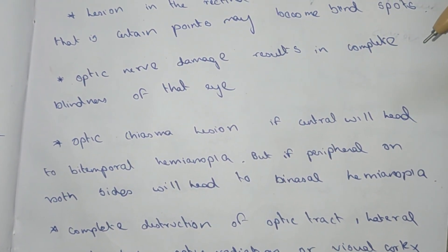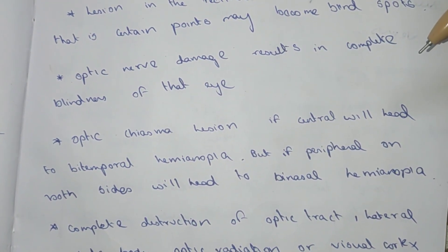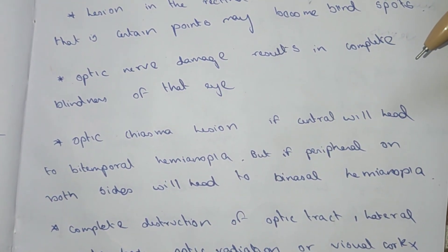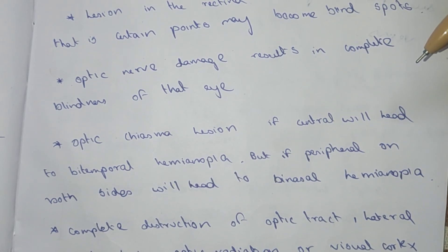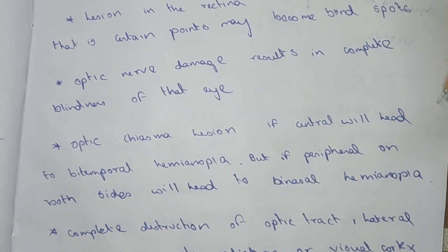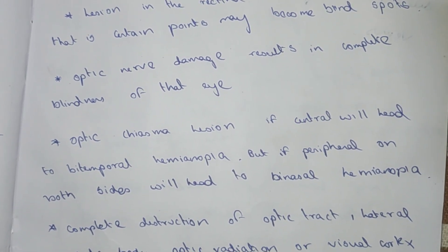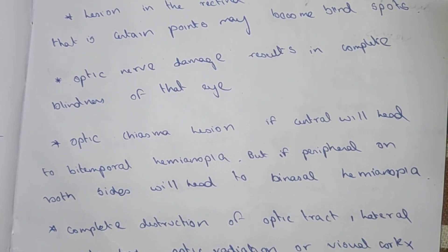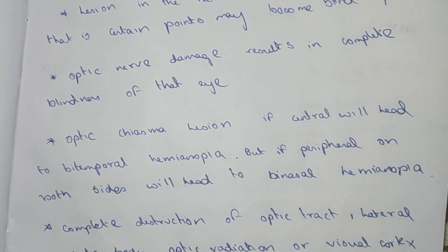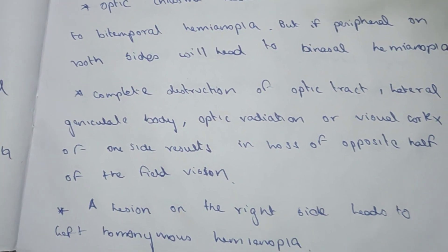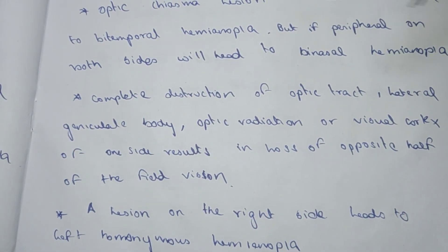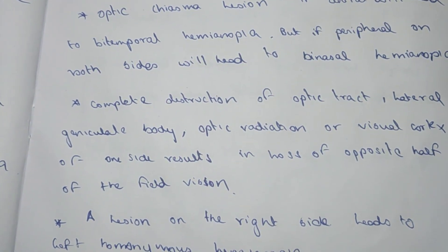To recap: a central lesion at the optic chiasma leads to bitemporal hemianopia, whereas a lesion on the peripheral side leads to binasal hemianopia.